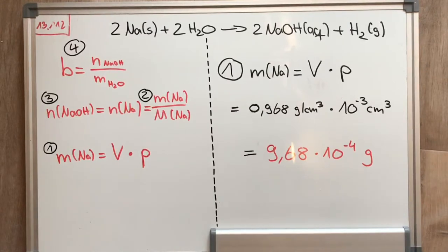And if you put in all the given facts into the formula, you get a mass of sodium of 9.68 × 10^-4 grams.